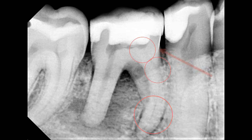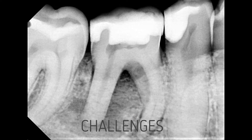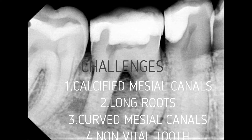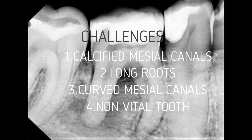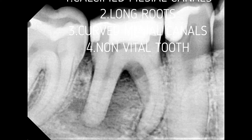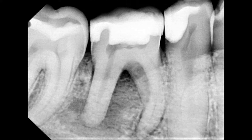He could locate the distal canal, but you can see the coronal calcifications that were present made it very difficult for him. He could not locate the mesial canals. If the pulp chamber continues into the canals, it makes our life much easier. But we are facing the following challenges: the canals are calcified, the tooth is non-vital so there are chances of flare-up, and the mesial root is curved, so there are always chances of ledge formation.